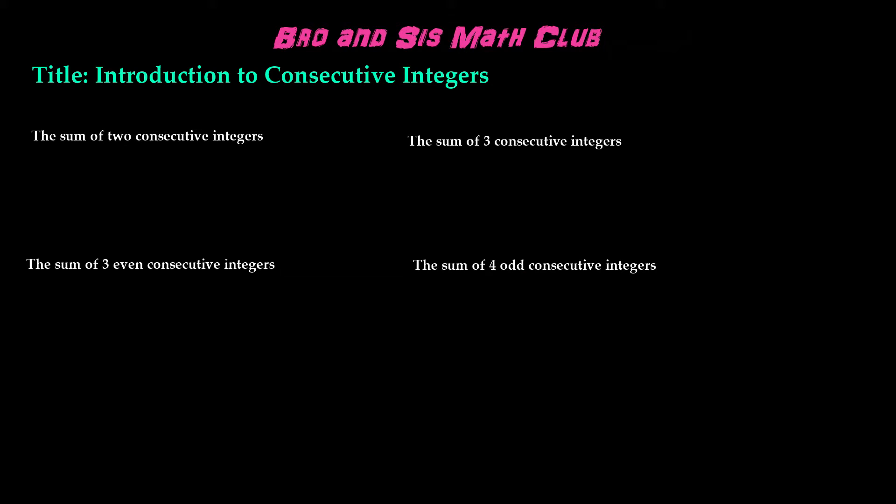The first example here we have is the sum of two consecutive integers. Since we don't know what the two consecutive integers are, we will be using a variable. For example, the variable x. It says we have two consecutive integers. Therefore, we're going to have a first and a second. The first will equal a variable, and as we said, we could use the variable x.